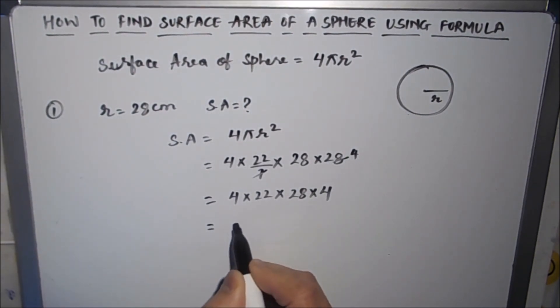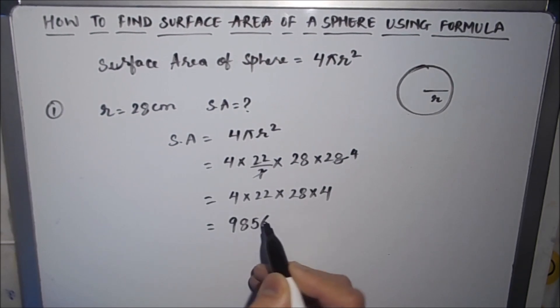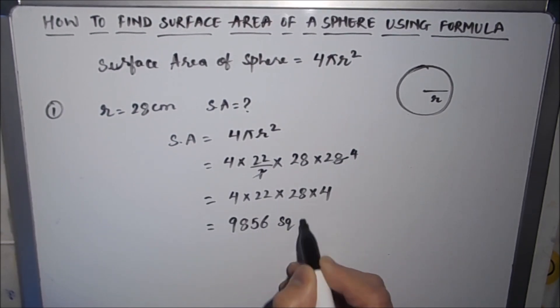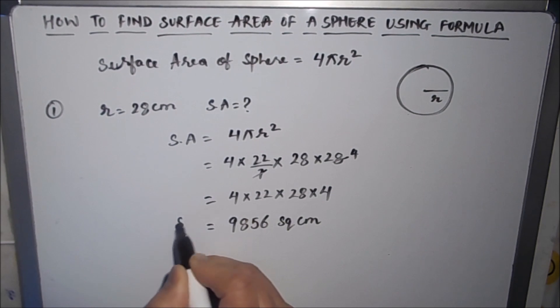Which gives us 9,856 square centimeters. So this is how we find the surface area of a sphere - it is 4 times the area of a circle.